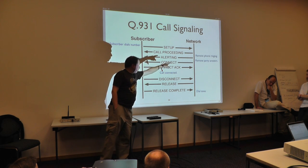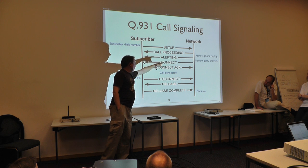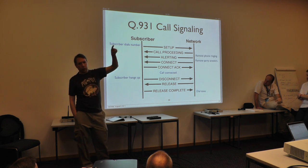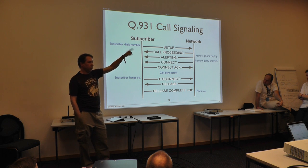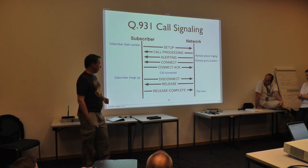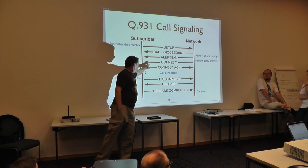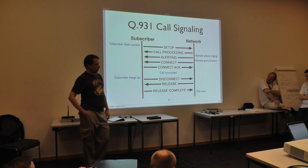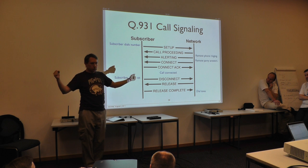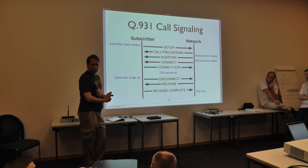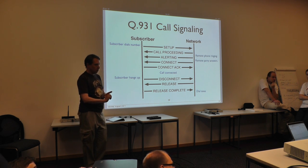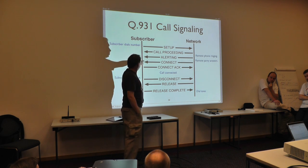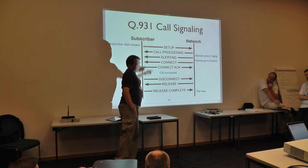At some point the remote phone starts ringing. When that happens you receive an alerting message on your end telling you the phone is ringing. When somebody answers, you get the connect message. You issue the connect acknowledge back to the network, and at that point the call is connected. The microphone on the phone probably got enabled at this point.